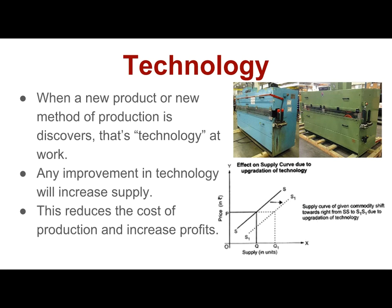Technology. When a new product or a new method of production is discovered, we call that technology. A new method of production isn't always a new machine — sometimes it's just a new way to approach the work, but it all gets lumped into technology. What it does is reduce your input costs: you can do more for less cost, whether that's time or money. Any improvement in technology will increase supply because you've decreased the cost of production, which increases the profits you can make. Anytime you increase available profits, the profit incentive takes over and supply increases.